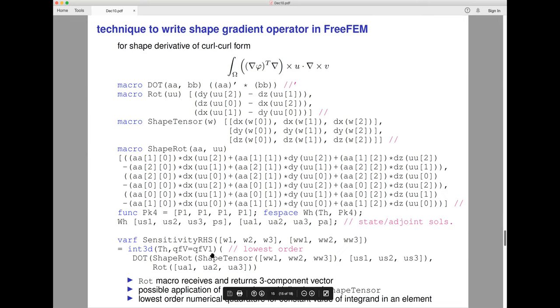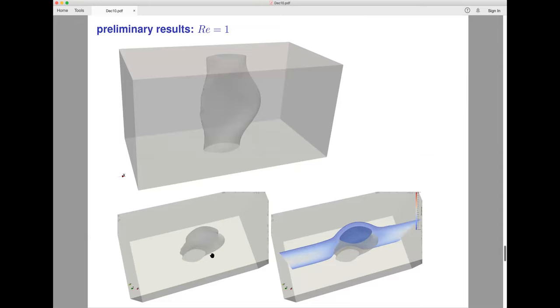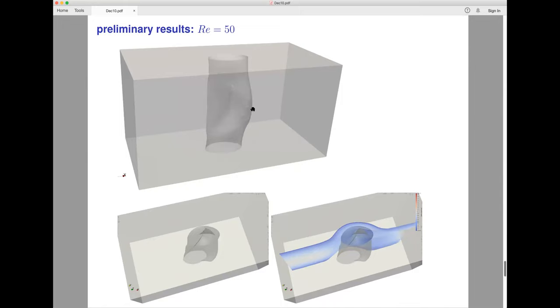Finally, I show a very preliminary result for the shape deformed for different Reynolds numbers. Here is a flow from the inlet, opposed to the flow before. The shape is changed to maximize the heat gradient. This shape changes like that. If the Reynolds number becomes much higher like 50, the domain will be changed.